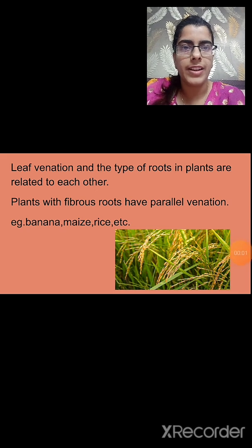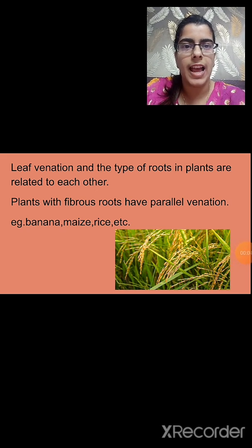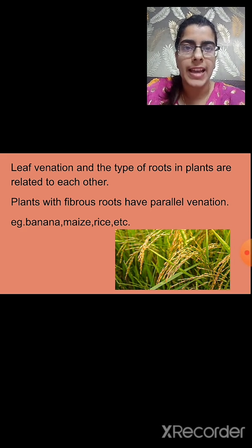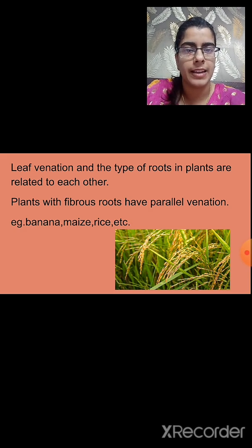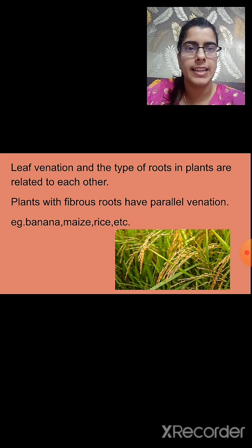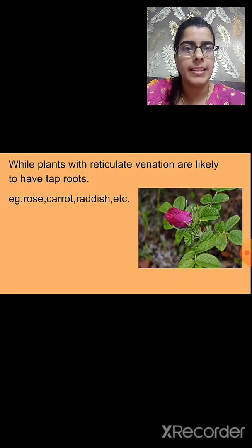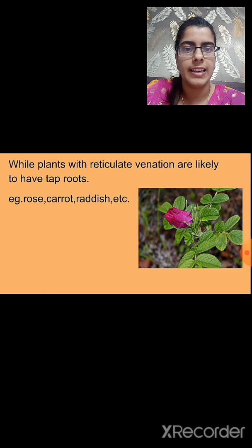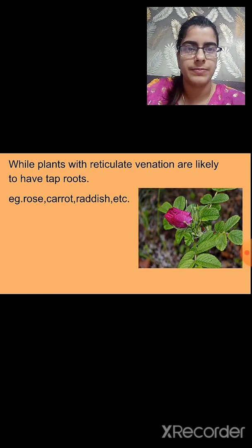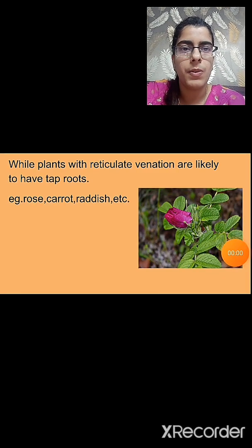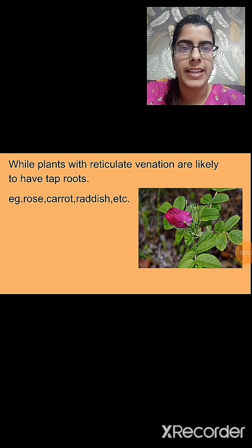There is an interesting relationship between leaf venation and the type of roots. Leaves with parallel venation have fibrous roots — for example, banana, maize, and rice. Plants with reticulate venation are likely to have tap roots — for example, rose, carrot, and radish. So by looking at the leaf, we can determine which type of root the plant has.